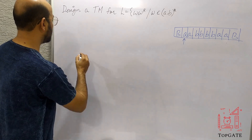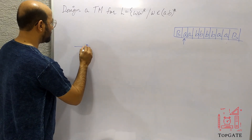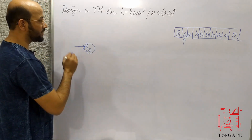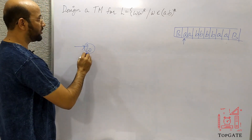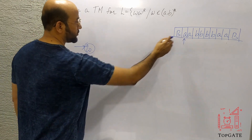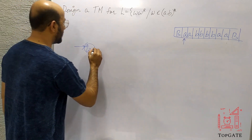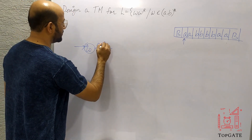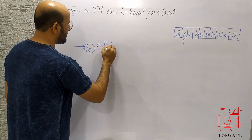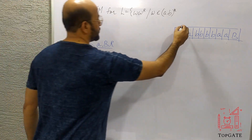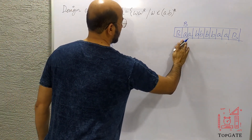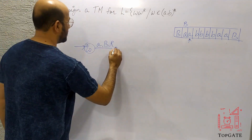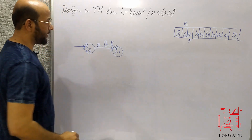Initially the pointer is at A and the machine is at state Q0. At Q0, we read this A and convert it to blank — the elementary move is: on reading A, write blank and move to the right direction. So this A is changed to blank, the pointer moves to the next A, and we arrive at state Q1.